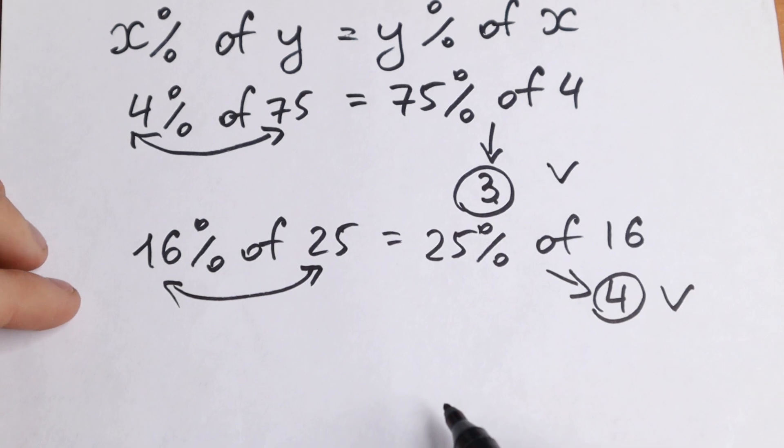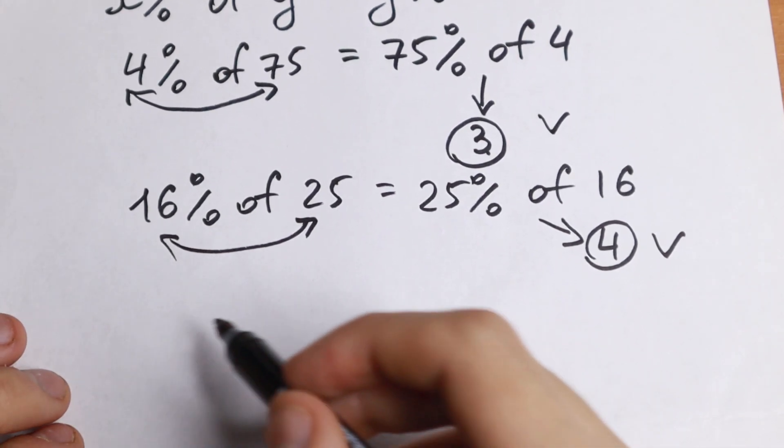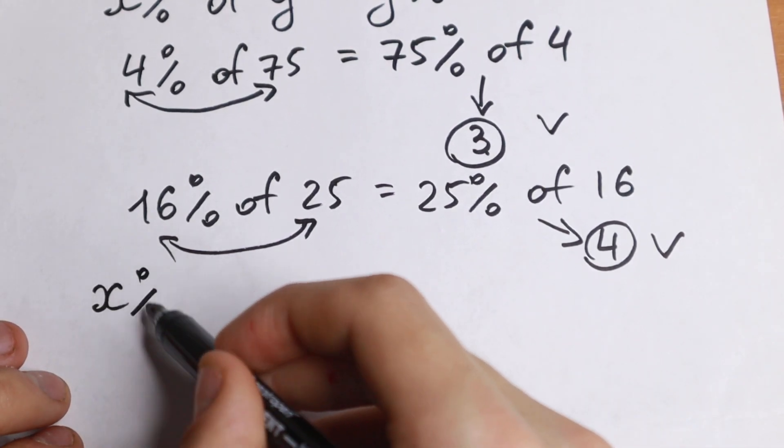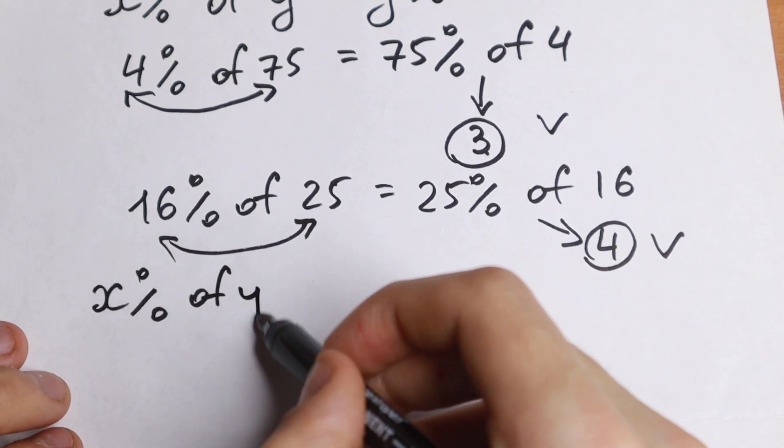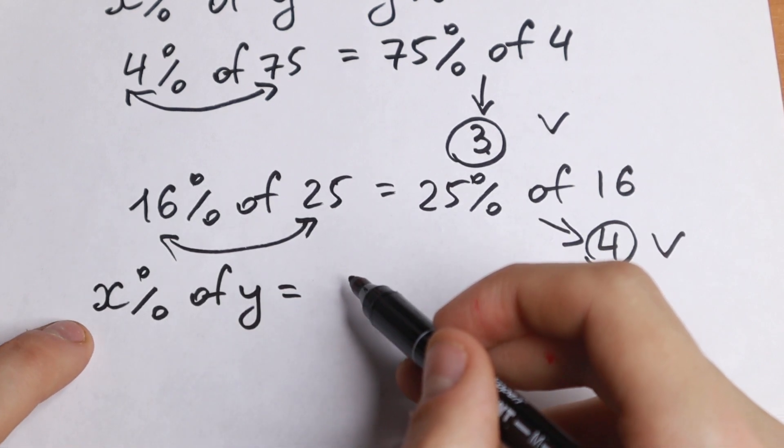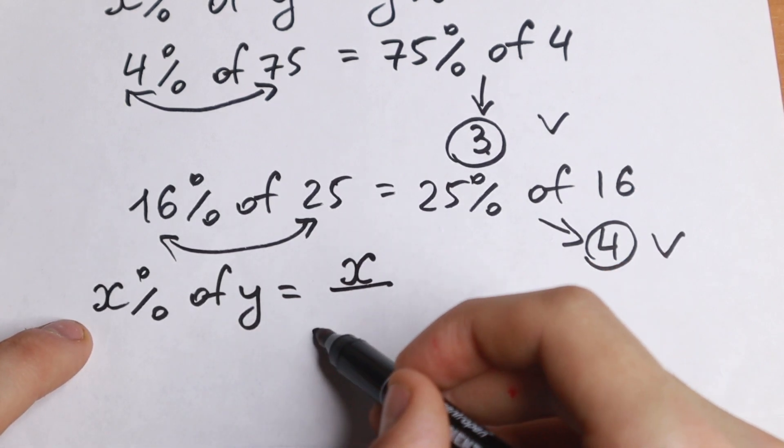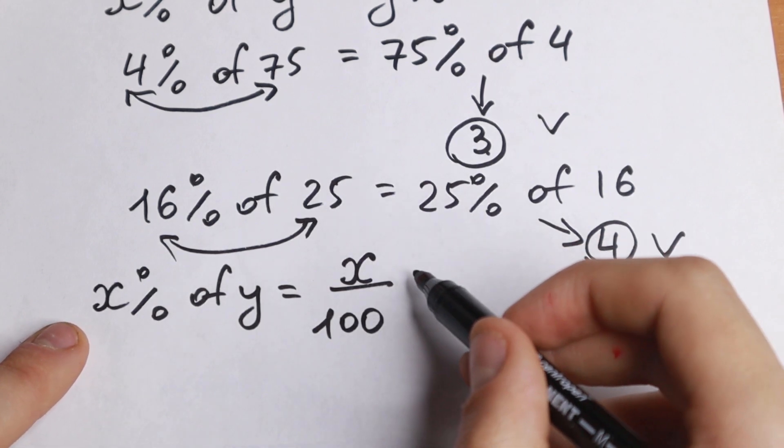Let's prove this rule. Why is this correct? Because take a look: if we have x percent of y, we will have that x percent is x over 100 times y.